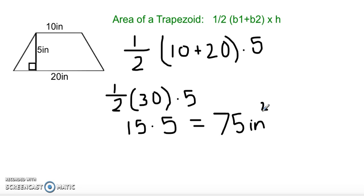So, the total area of the trapezoid is 75 inches. So, we need to get enough icing to cover 75 inches of this cake. So, if we divide 75 divided by 25,